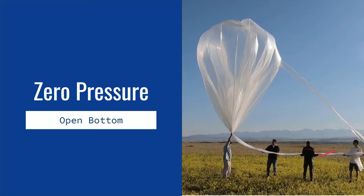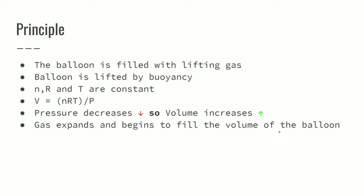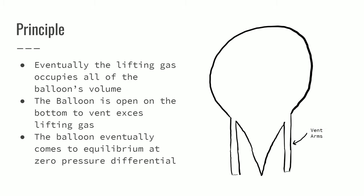So there's a lot more volume for it to go into. It begins to fill the volume and eventually it will occupy all of the volume of the balloon. And at that point it will begin to come out of the bottom of the vent arms which basically has an opening to allow the gas to come out.